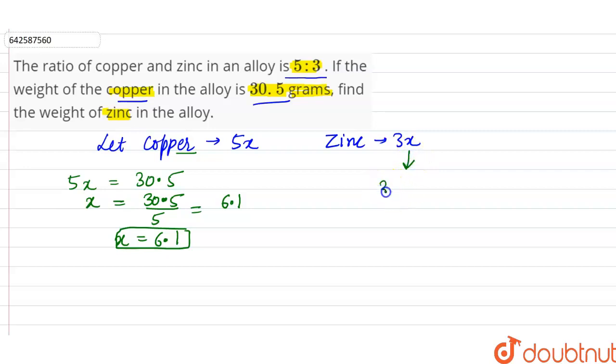By substituting the value of x as 6.1, so this is equal to 3 times 6.1. Three times 6 is 18, so this is 18.3. Right, so the weight of zinc in the alloy is 18.3 grams and this is the required answer.